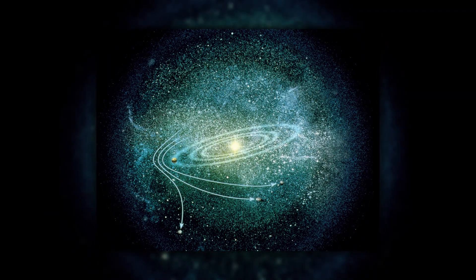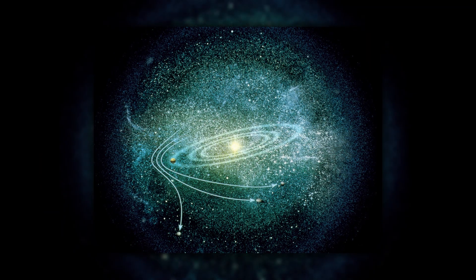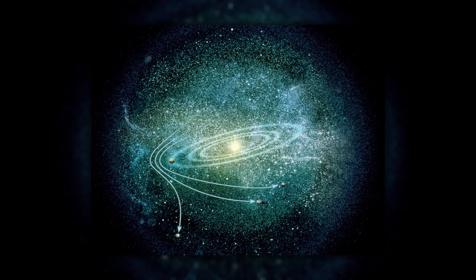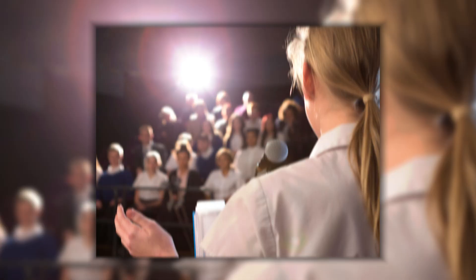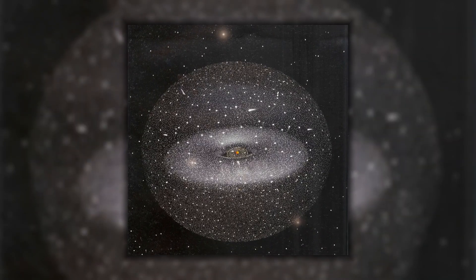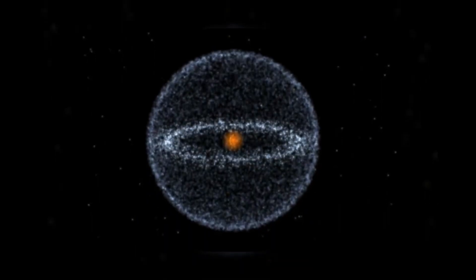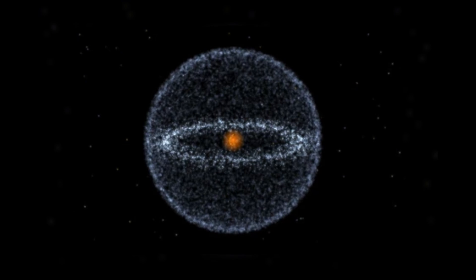The mystery of the Oort Cloud is not just about what we know, but also about what we don't know. For instance, there is ongoing debate about the existence of a possible inner Oort Cloud, also known as the Hill's Cloud, which could be denser and closer than the outer Oort Cloud.